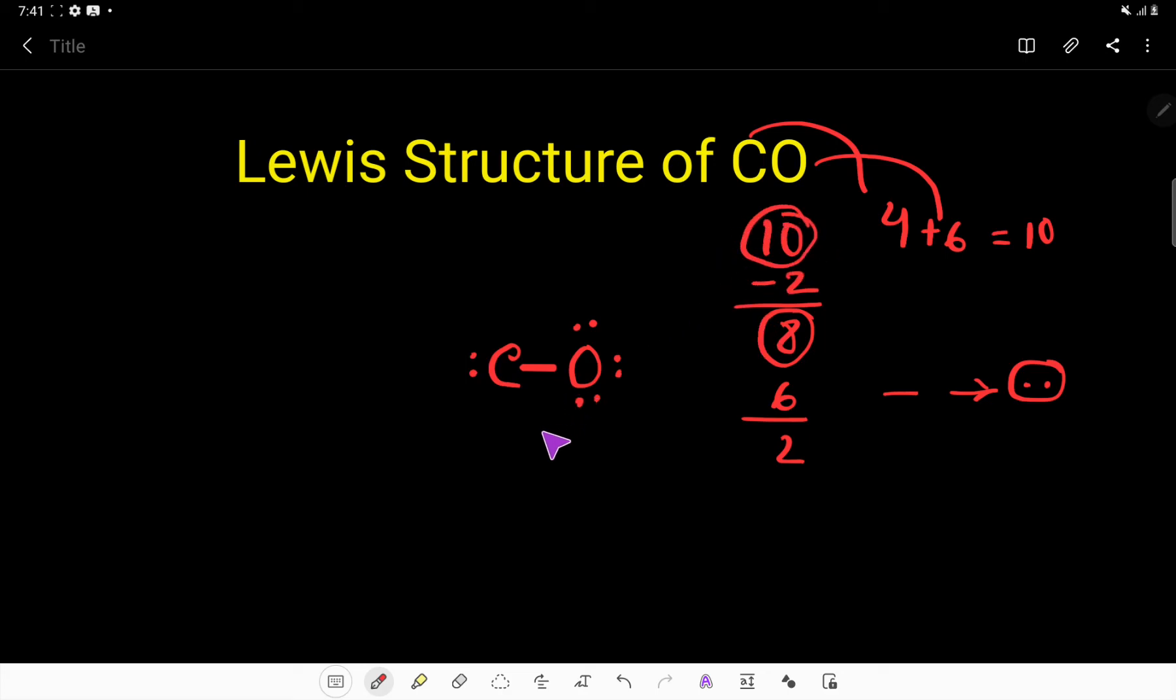Now we have to look for the octet. Here oxygen: 2, 4, 6, 8. Oxygen has 8, so it has satisfied the octet rule. But carbon here has 2, 4. The octet for carbon is not fulfilled, so I will